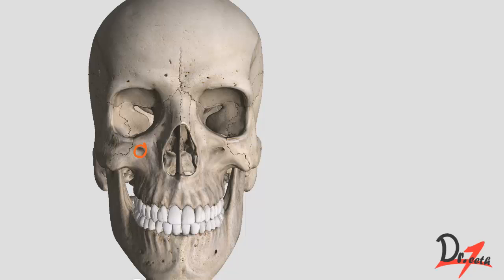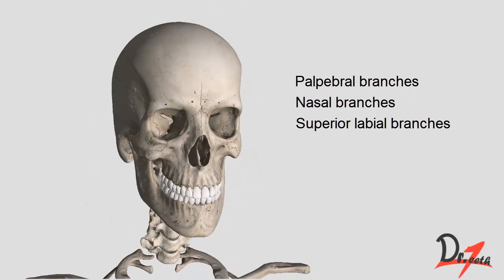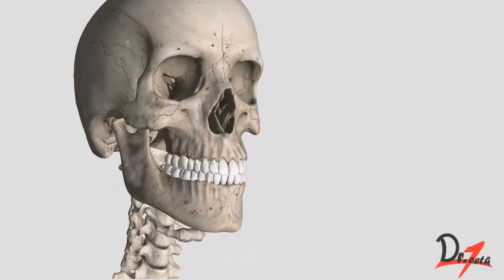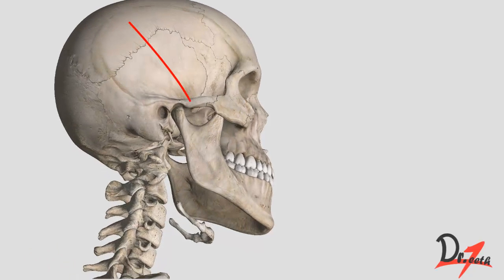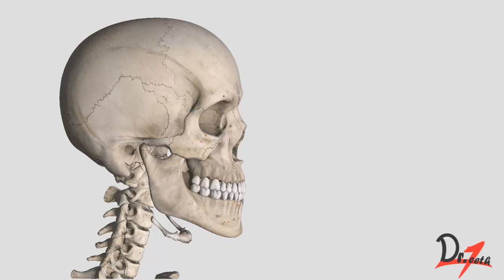On the face, the maxillary nerve gives three branches: the palpebral branches, the nasal branches, and the superior labial branches. The mandibular nerve passes through the foramen ovale and forms its main trunk in the infratemporal fossa — which is the fossa below the temporal bone. After a short course, it divides into a large posterior division and a small anterior division.